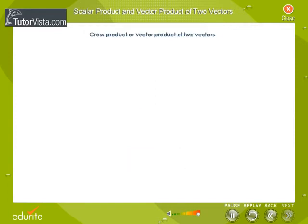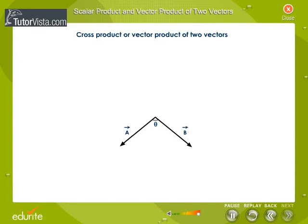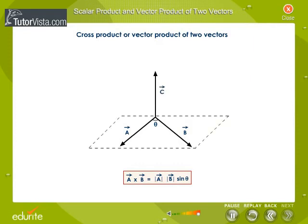Cross product or vector product of two vectors. Let a and b be two vectors and theta be the angle between them. The magnitude of the cross product of vectors a and b is equal to modulus of vector a multiplied by modulus of vector b multiplied by sine theta. The cross product of vectors a and b gives a third vector c.